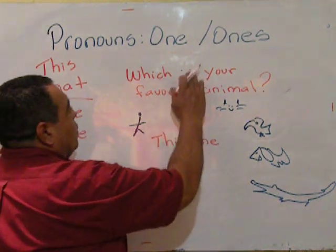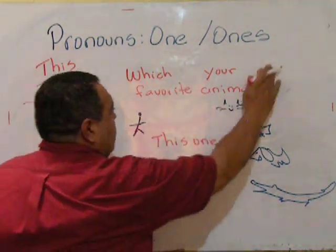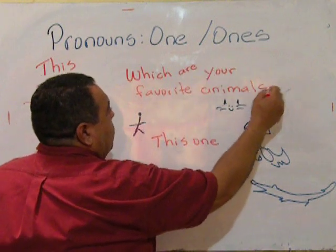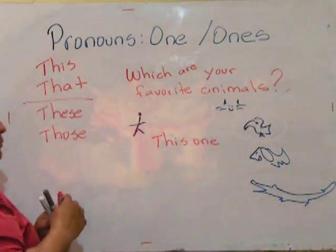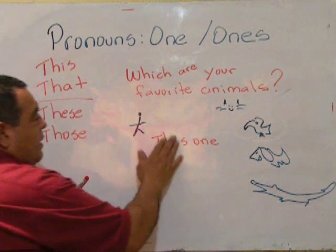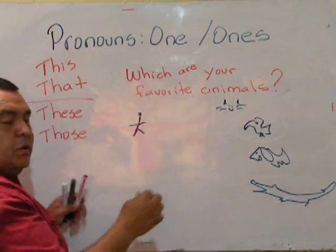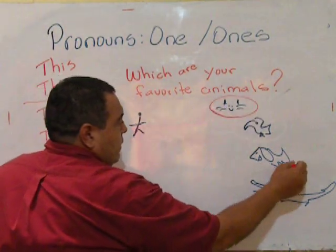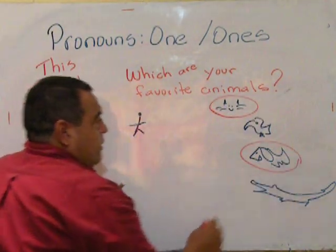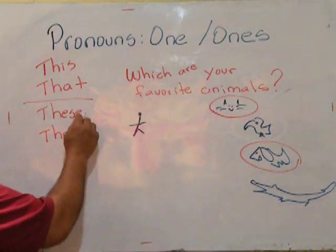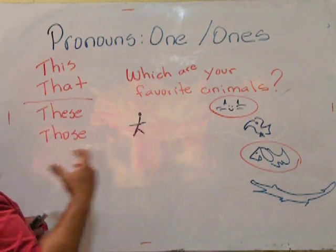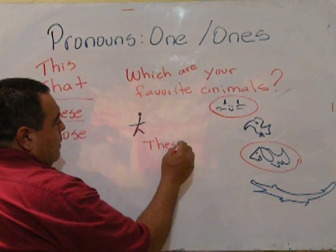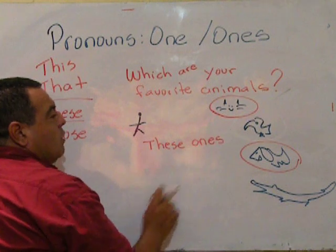Let's change the question. Which are your favorite animals? The answer changes. For example, I am going to say... plural, right? So I have to choose between either one of these. Let's suppose they are close to me — I will say 'these ones.'